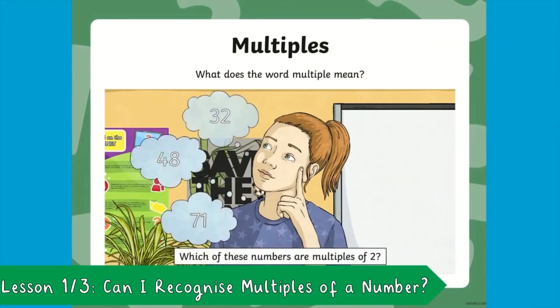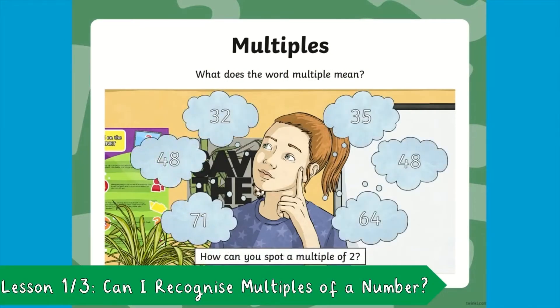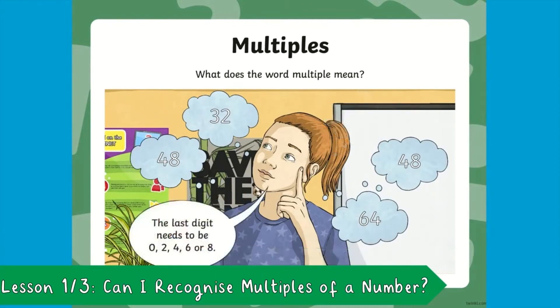In the first lesson, Darshana teaches your children how to recognise multiples of a number with a range of strategies and tips. Which of these numbers are multiples of two? That's right — the last digit needs to be 0, 2, 4, 6 or 8. So basically an even number.